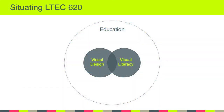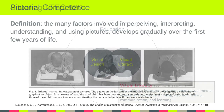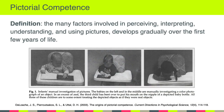On the visual literacy side of the equation, we learned that visual literacy is the ability to interpret, use, and create visual media in ways that advance thinking, decision-making, communication, and learning. We learned that humans aren't born knowing how to understand and make sense of visual representations.